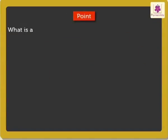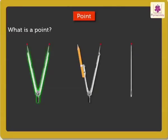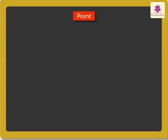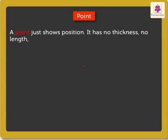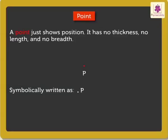What is a point? The sharp tip of a pair of dividers, compasses or the tip of a needle all represent a point. We denote the position of a point with a dot. A point just shows position. It has no thickness, no length and no breadth. Here, P is a point. We read it as Point P.